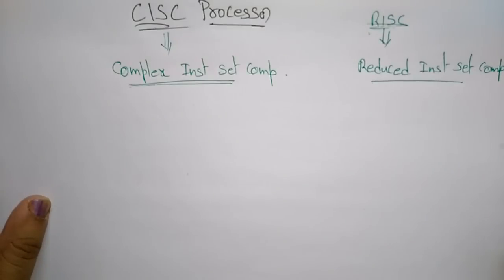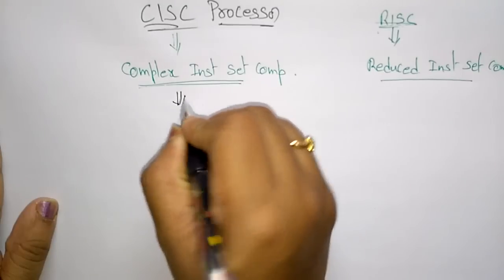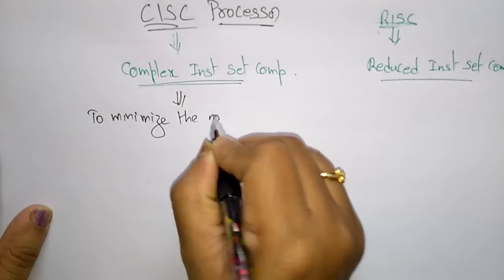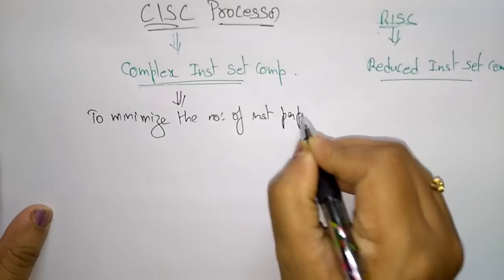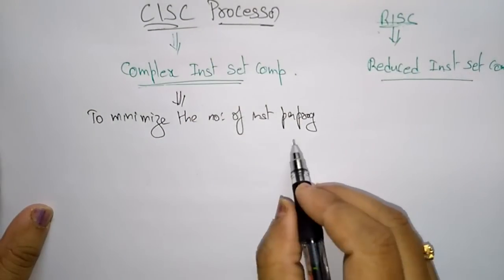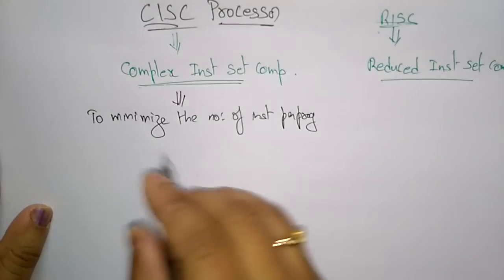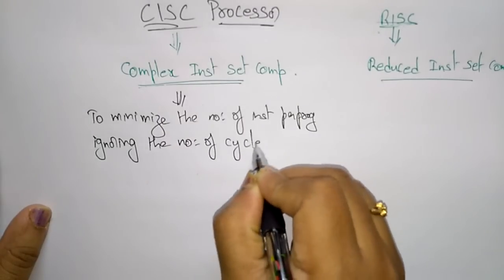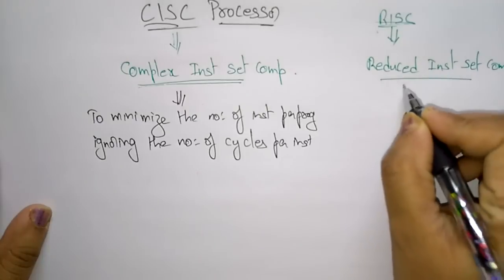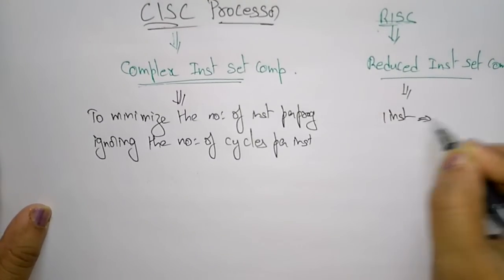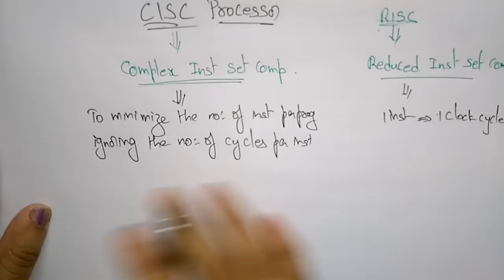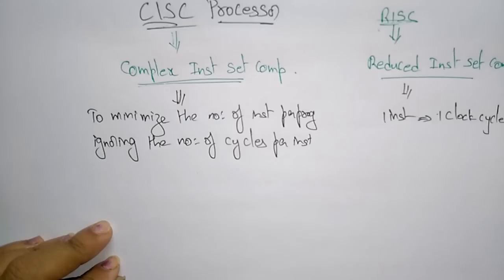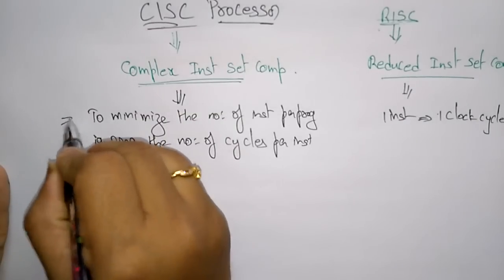The CISC is designed to minimize the number of instructions per program. The main use of the CISC processor is to reduce the number of instructions per program while ignoring the number of cycles per instruction. Whereas in RISC, one instruction executes in one clock cycle, in CISC it is designed to minimize instructions per program and ignores cycles per instruction.